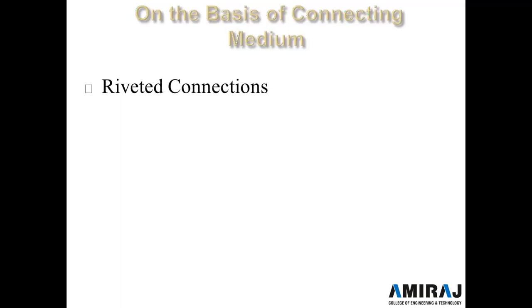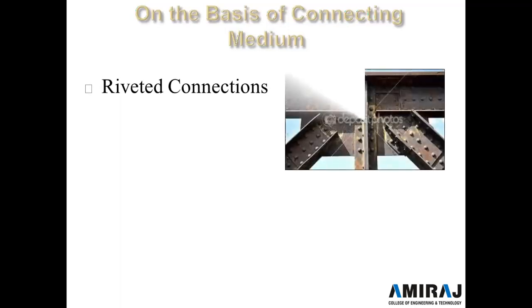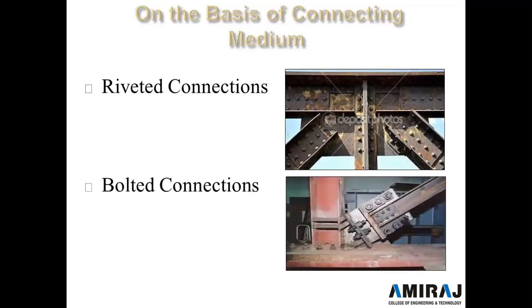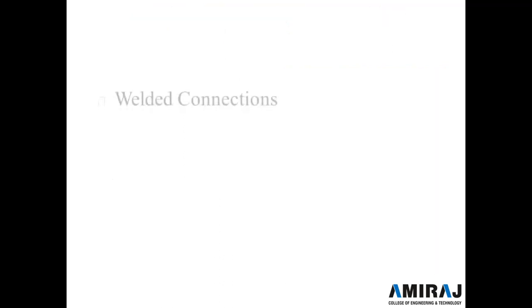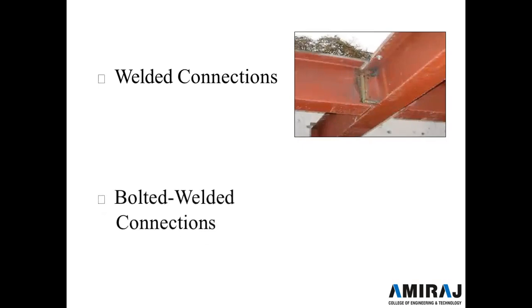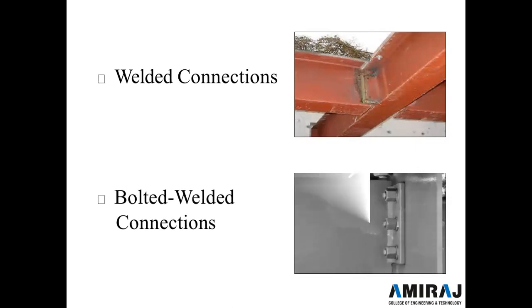On the basis of connecting medium, the first type is a riveted connection, as shown in figure. Riveted connections are also seen in different types of structures, like bridges constructed before bolted connections were used. The second is bolted connection, which is also shown in figure. The last is welded connection — two members connected by welding. The bolted-welded connection uses both bolted connection and welding.